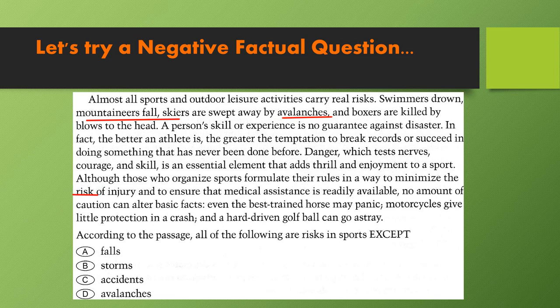We may also need to look for synonyms of these words. If we scan the paragraph for text about falls, that corresponds to choice A — we find this, and it's a match. For choice C, we found that information where it talks about risks. Choice D is where it talks about skiers being swept away by avalanches. But there's nothing in the paragraph that talks about storms. So choice B looks like it might be the answer. Therefore, choice B is our answer.